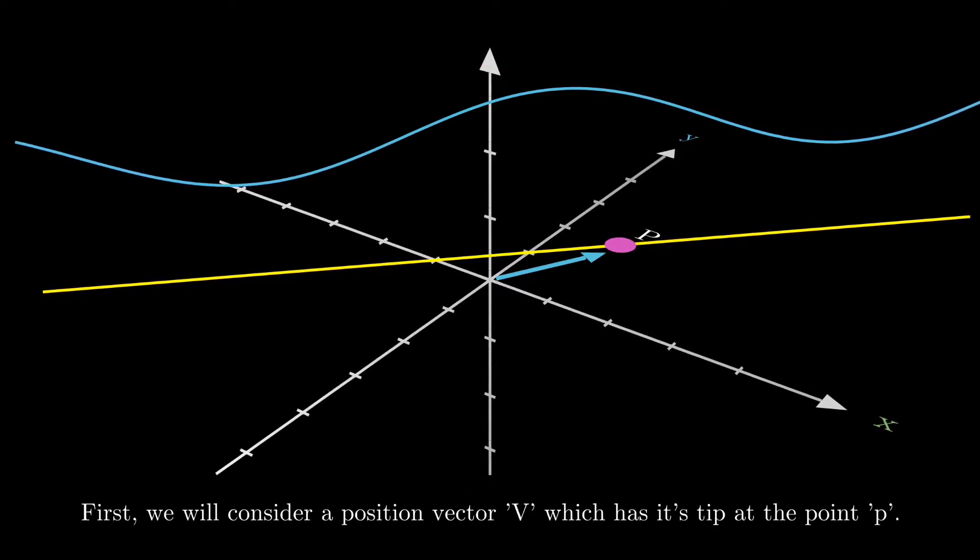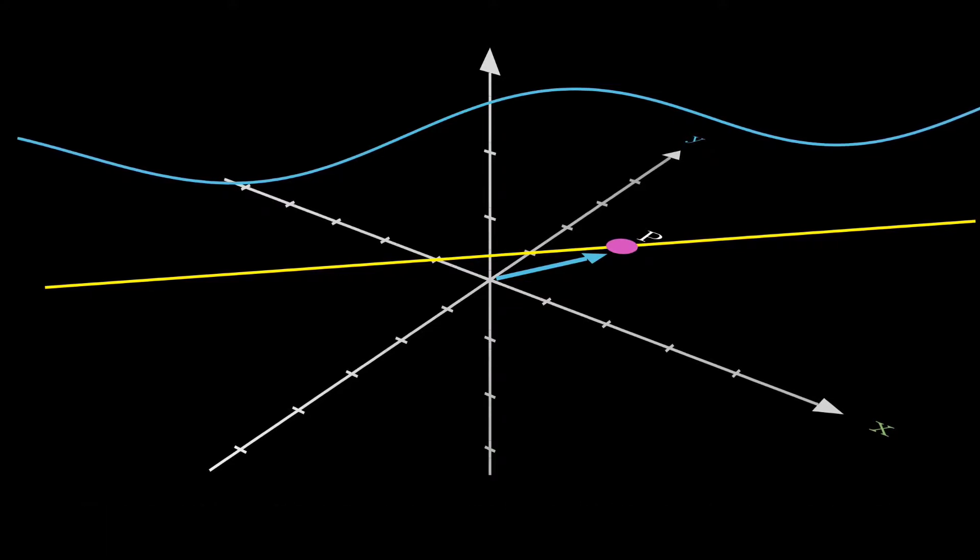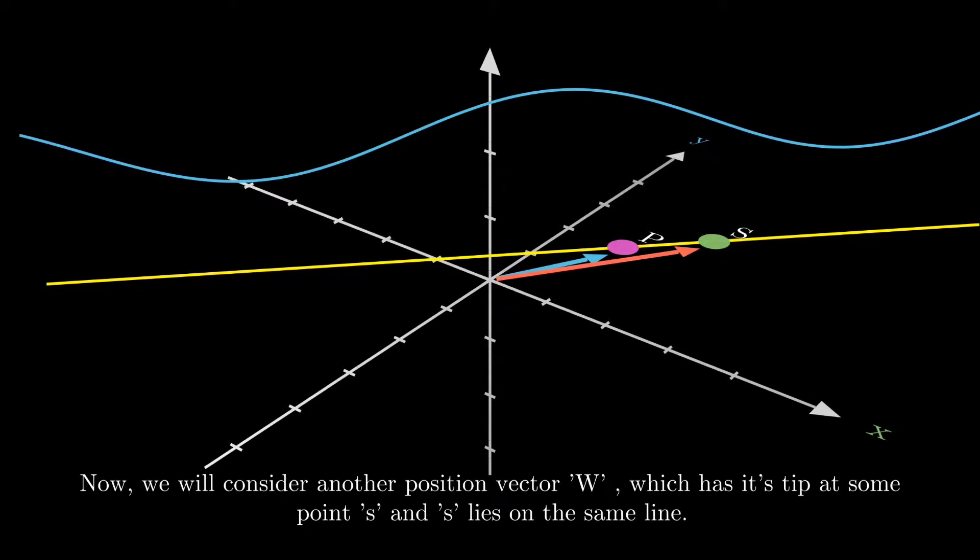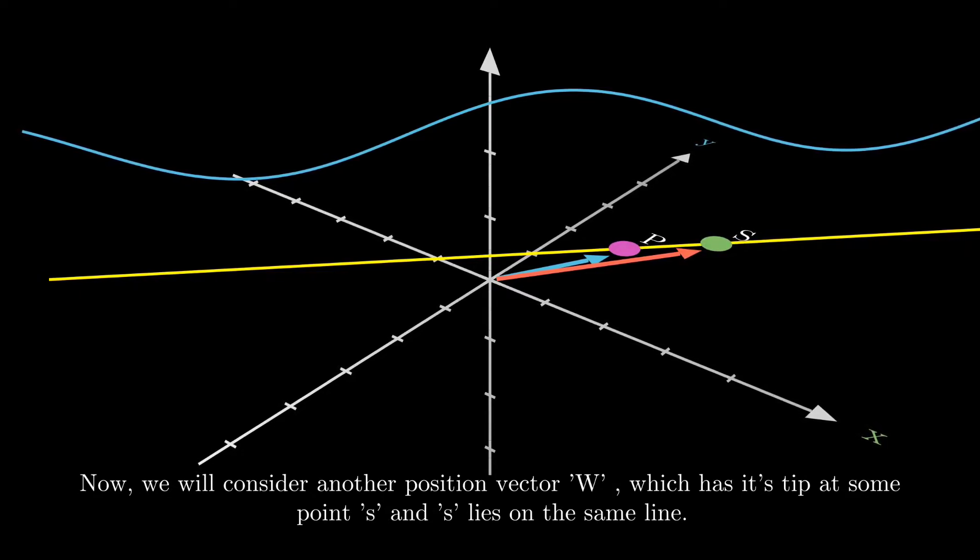First, we will consider a position vector V which has its tip at the point P. Now, we will consider another position vector W, which has its tip at some point S. And that point S lies on the same line.